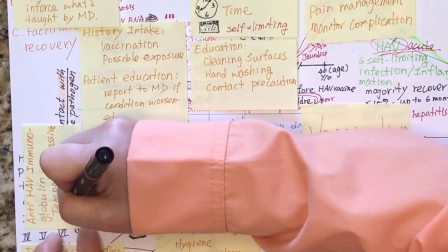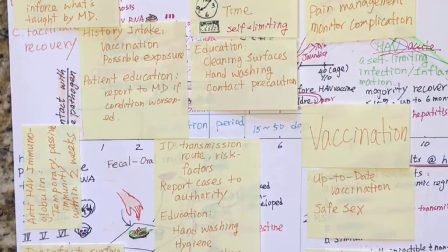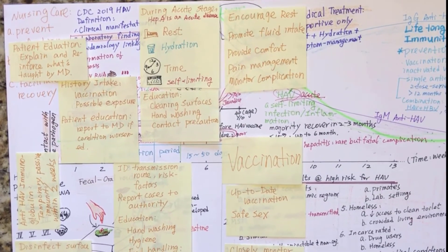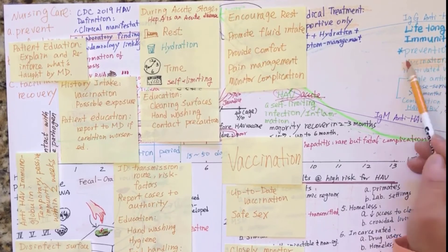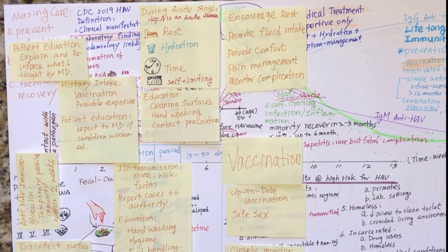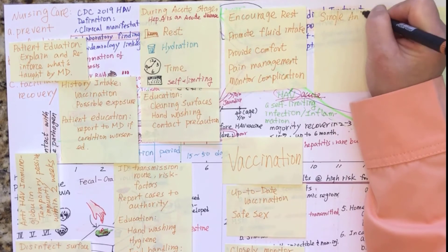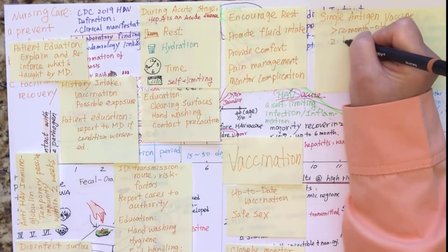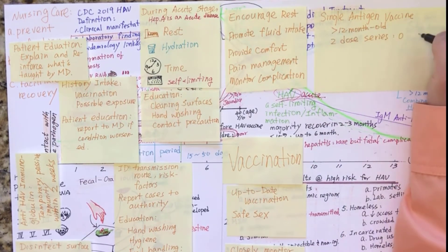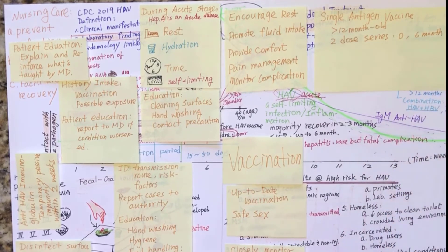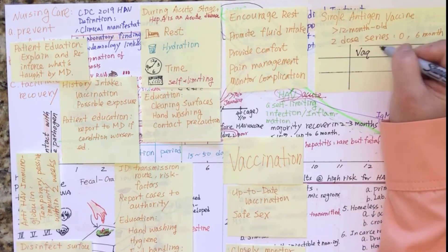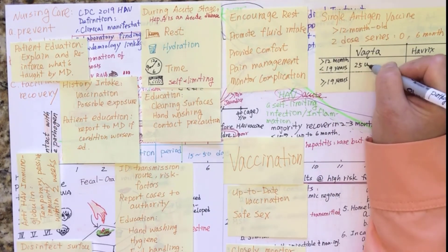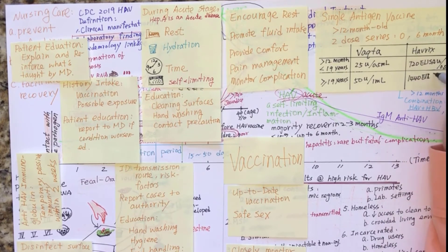Immunoglobulin to hepatitis A must be given within two weeks after exposure for it to be effective. Finally, vaccination is the last topic discussed in this lecture. Teach the client on vaccination. Hepatitis A vaccine is included in the routine schedule for children and is indicated for children at age 12 months and older; it is also recommended for adults at risk. The dosage for adults should be double the dose given to children. Here is a table indicating two different single-antigen hepatitis A vaccines, showing that dosages given to adults are double those given to children.